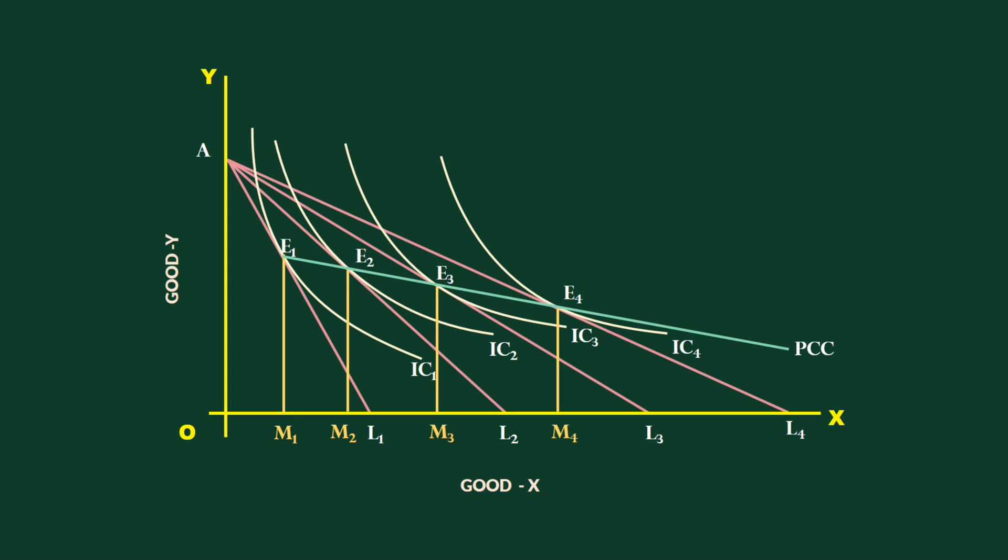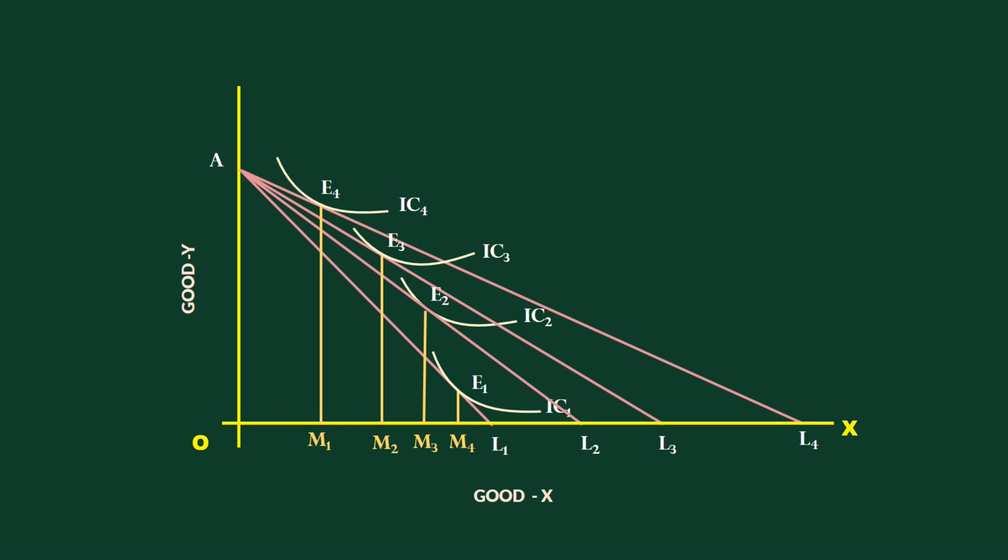This need not be the case of PCC always. Look at this graph. PCC slopes upwards from right to left. To begin with, the consumer buys M4 units. With fall in the price, the other price lines are formed.